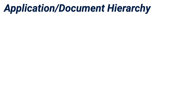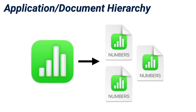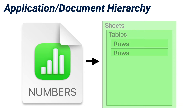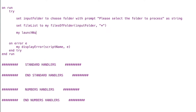We return transformed path to give it back to the caller. Now our next handlers will start dealing with Numbers. It's important to understand the application document hierarchy when working with an application. Numbers is made up of documents; documents are made up of sheets; sheets are made up of tables; and tables are made up of rows, columns, and cells. So if I want to work with a column, I need to know what table, sheet, and document it's part of.